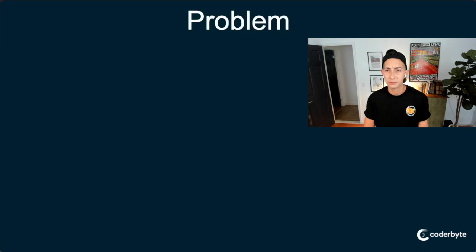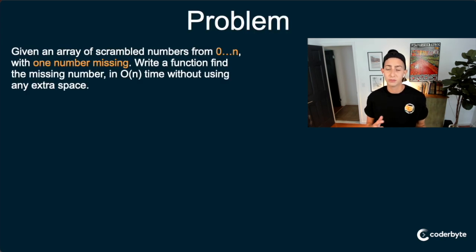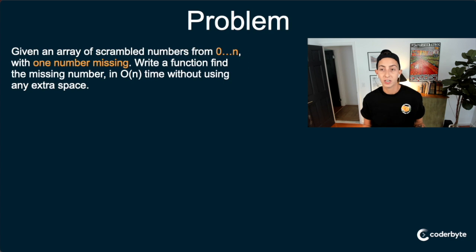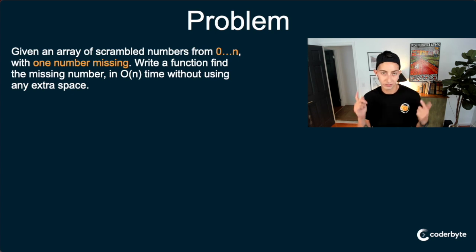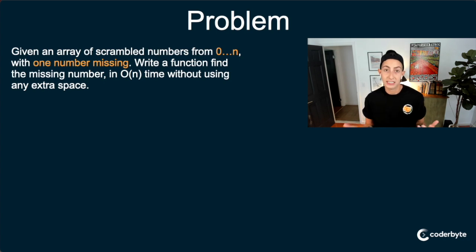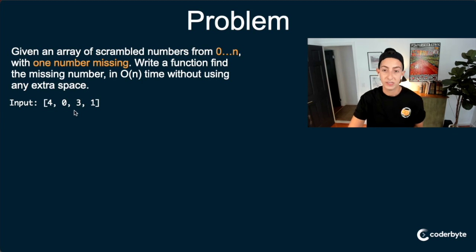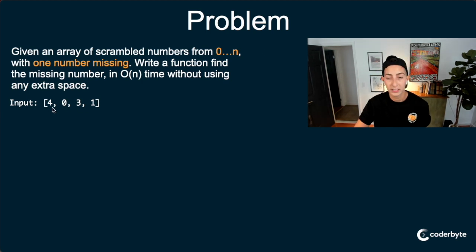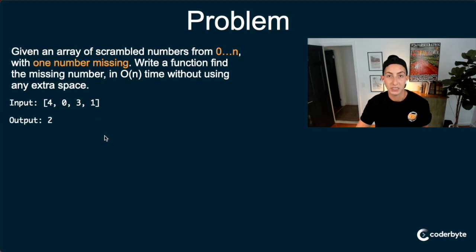So what's this week's problem? Given an array of scrambled numbers from 0 to n with one number missing, write a function to find the missing number in O(n) time without using any extra space. Cyclic sort is the right approach here because we have to do it in linear time without using any assisting data structures. So let's look at an example input: we have an array with the numbers 0 to 4, and we are missing the number 2. So we would expect our output to be 2.